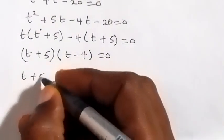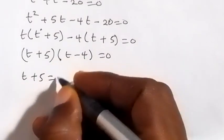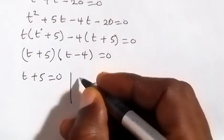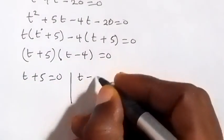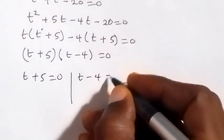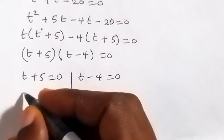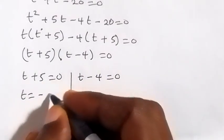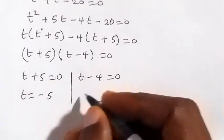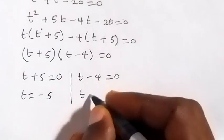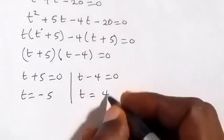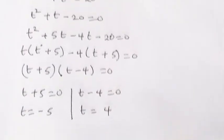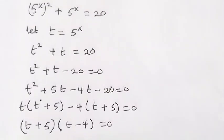So we have two possible cases: t plus 5 equals zero, or t minus 4 equals zero. From the first case, t equals minus 5, and from the second case, t equals 4.